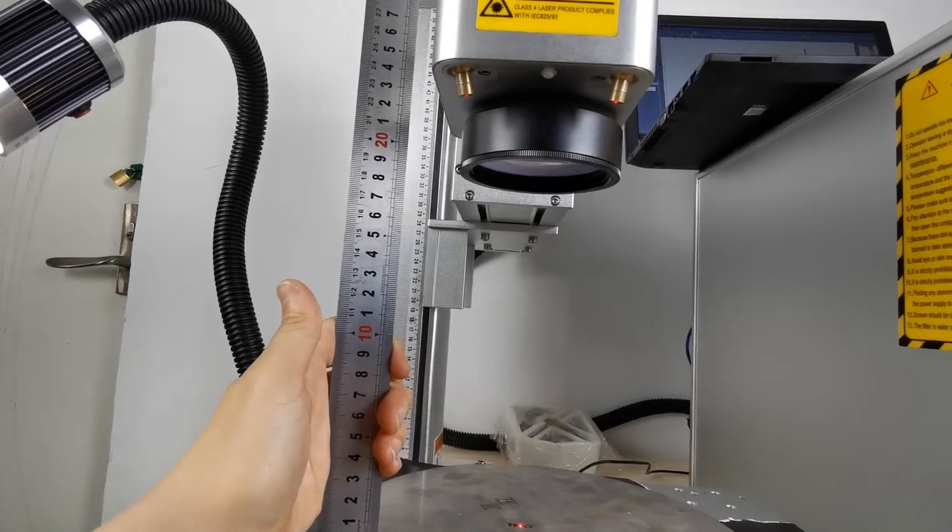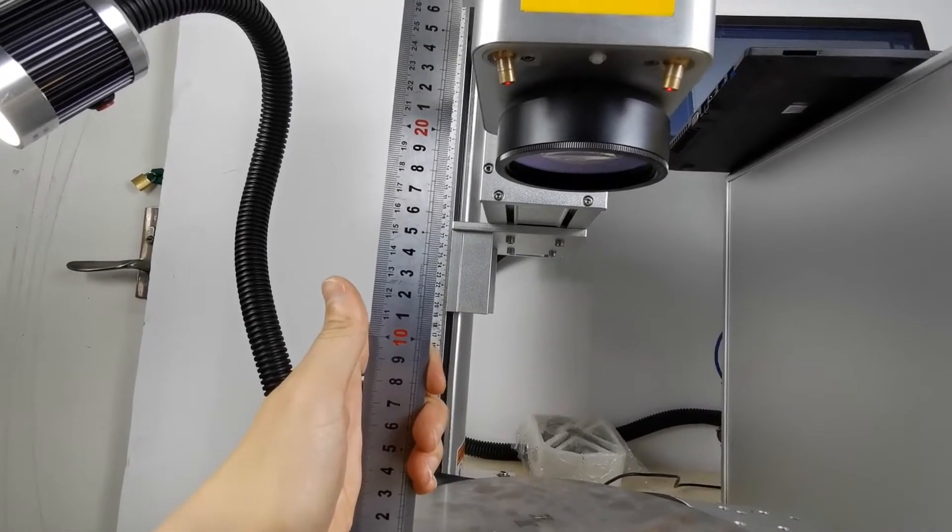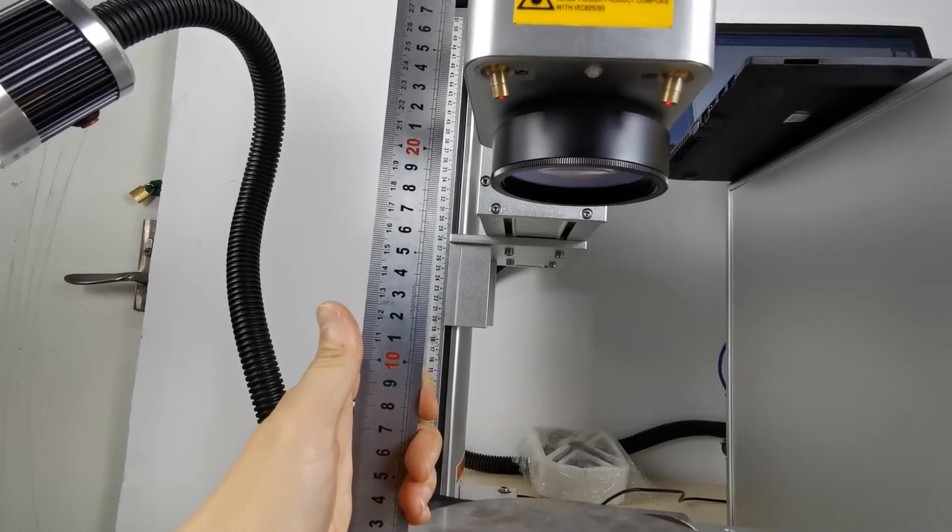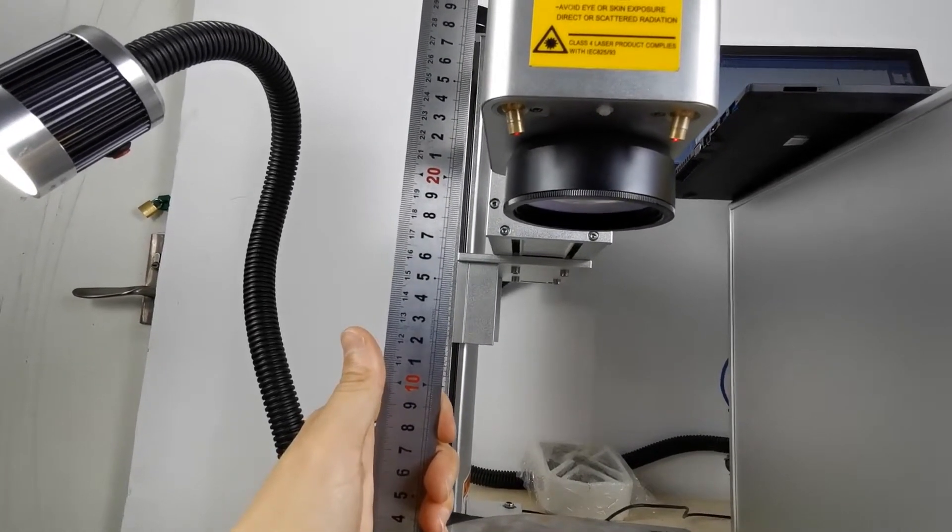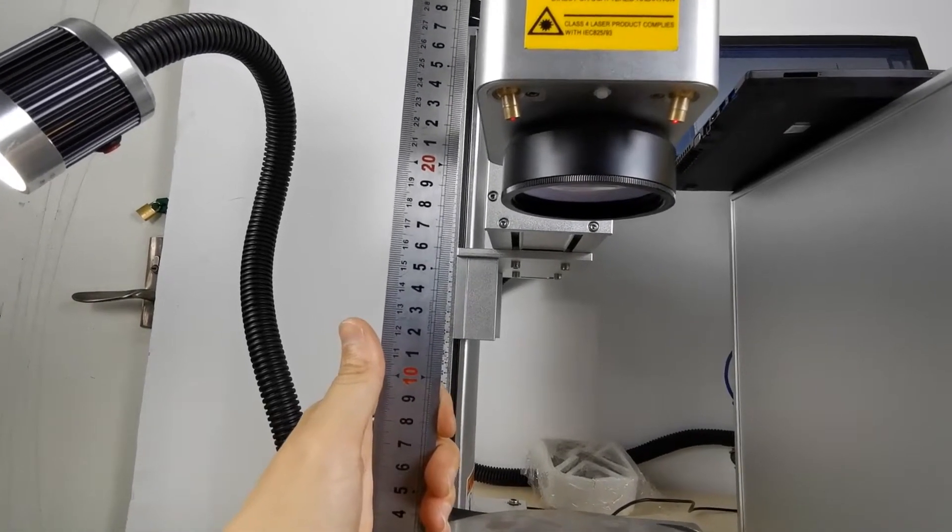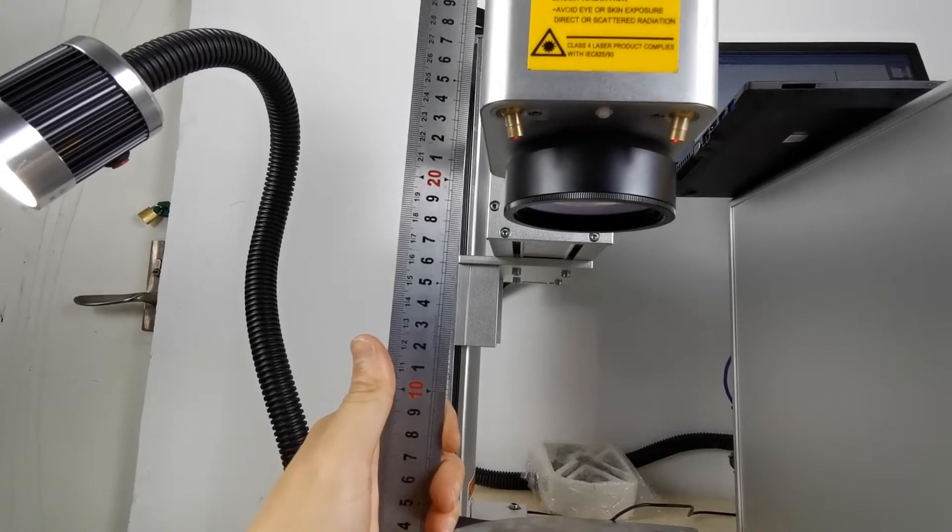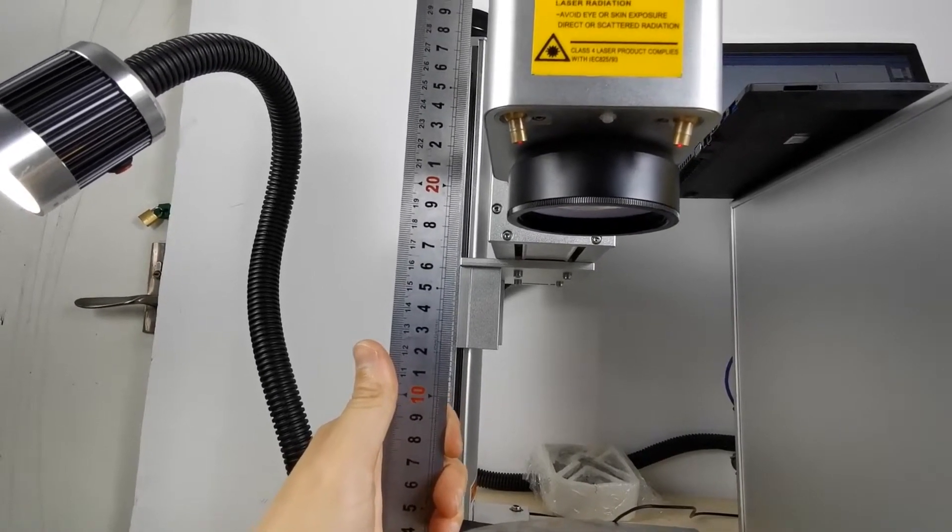Based on experience, the best focus length for 100 millimeters F-theta lens will be 190, around 190. And the data will not be the same for different lenses. It will be a little different.